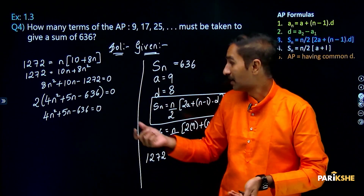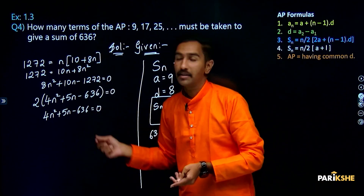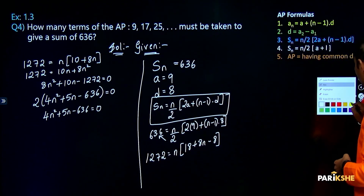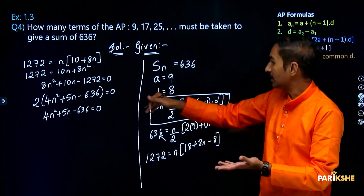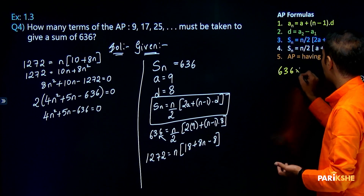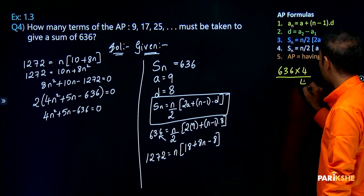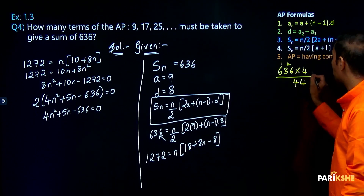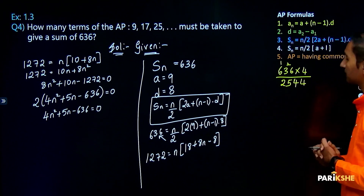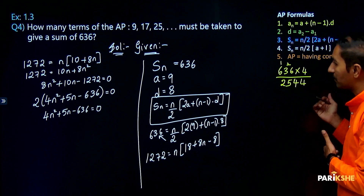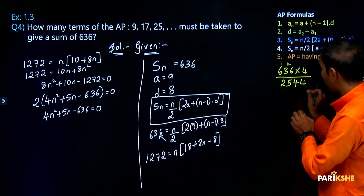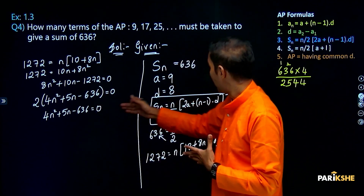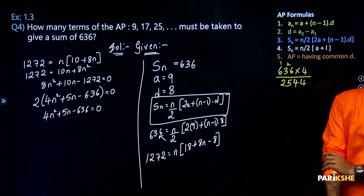To factorize, we need to split the middle term. We need to multiply the numbers such that the product equals minus 2544 and adds to give plus 5n. First, 636 into 4 is 2544. So we need to split 2544 — finding which factors add or subtract to give plus 5n and multiply to give minus 2544.